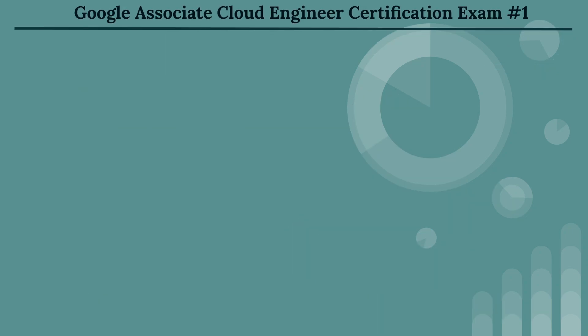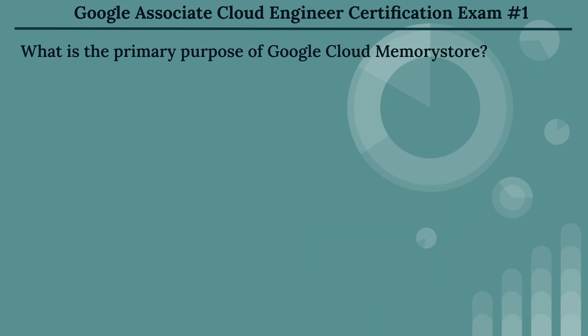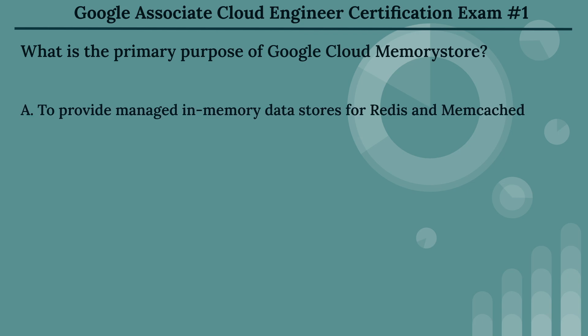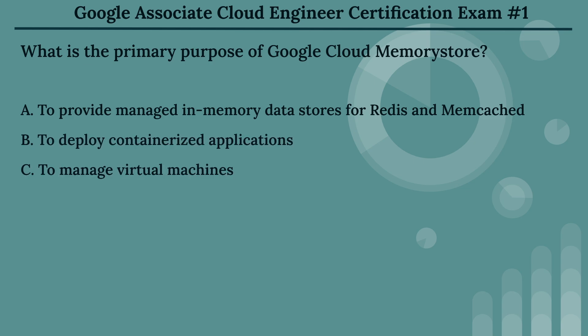The first question is: what is the primary purpose of Google Cloud Memory Store? The options are: Option A, to provide managed in-memory data stores for Redis and Memcached. Option B, to deploy containerized applications. Option C, to manage virtual machines. Option D, to store large datasets.